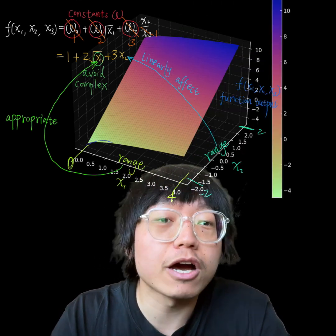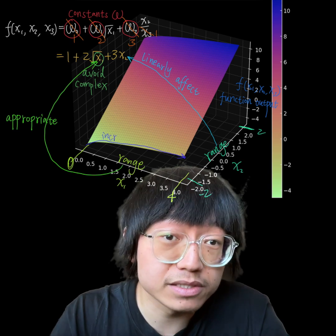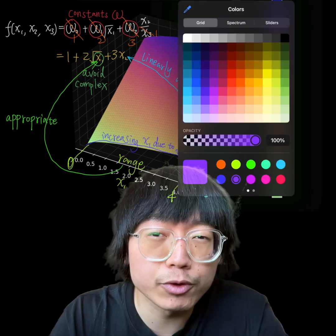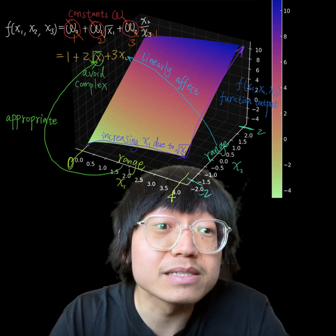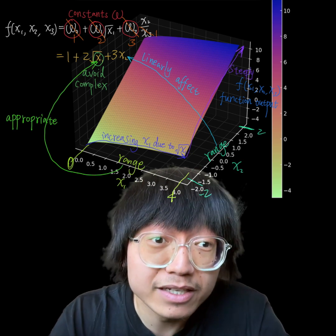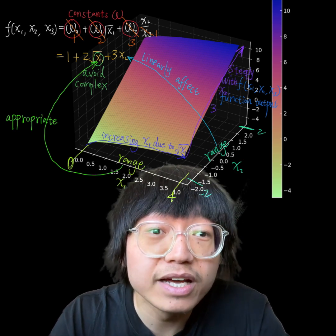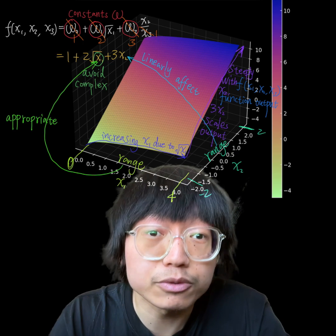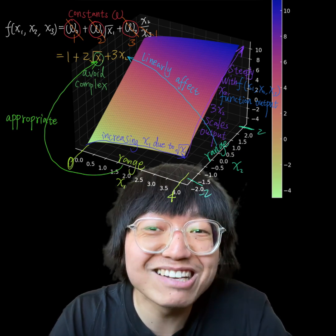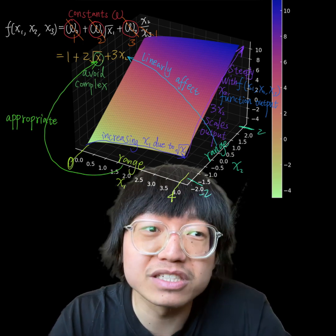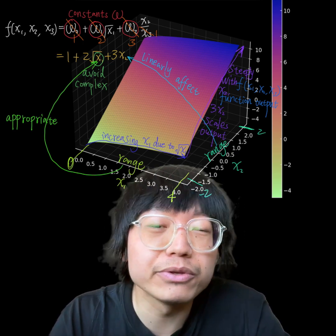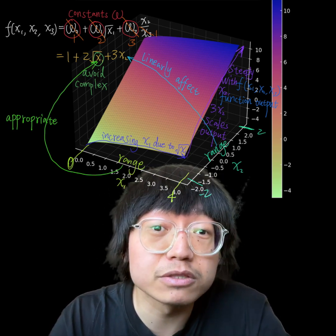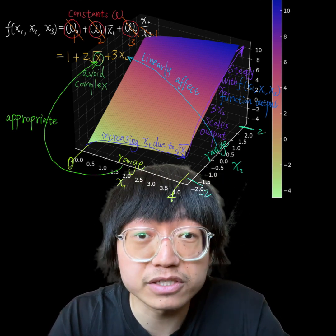As you can see, the output increases with increasing x₁ due to the square root operation, and more steeply because x₂ directly scales the output. This function clearly demonstrates the nonlinear interaction between x₁ and x₂ in determining the value of function f.